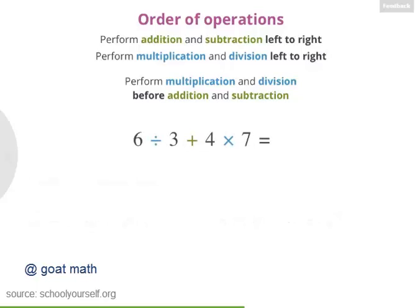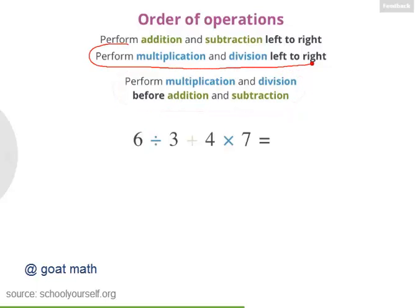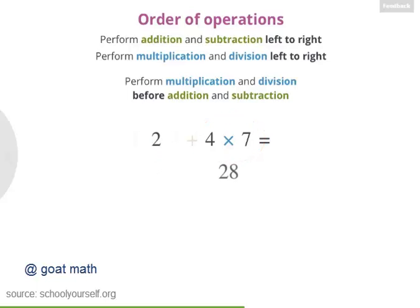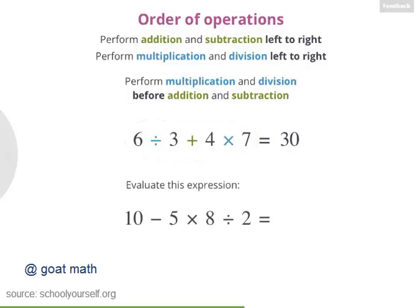Next, let's look at a more complicated expression. Again, we first want to look at the multiplication and division. This rule says we should perform these operations from left to right. So first up is 6 divided by 3, or 2. And then 4 times 7 is 28. So now we're done with all the multiplying and dividing, and we can look at the adding and subtracting. 2 plus 28 equals 30. So this expression equals 30. Try another example, and if you get stuck, feel free to ask for a hint.